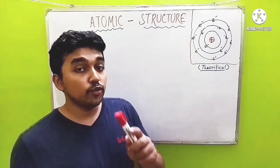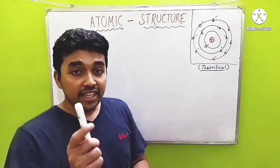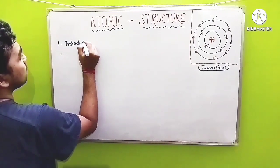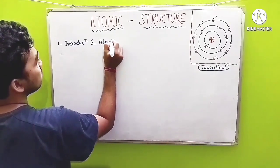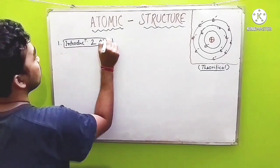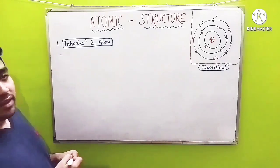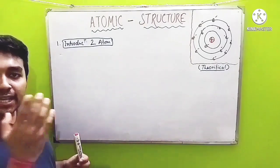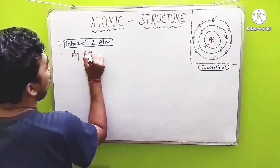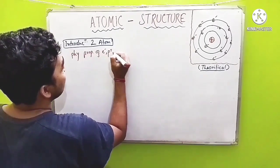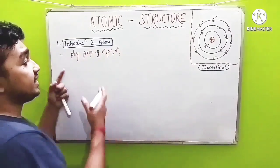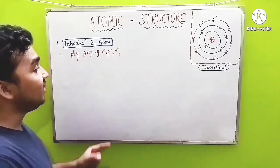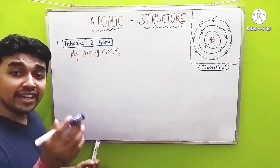Firstly, you need to know the introduction to atom. Here, you will get to know the different physical properties of the elementary particles of an atom — that is, the physical properties of electrons, protons, and neutrons — how they were gradually discovered, by whom, and what type of questions actually come from this part. All are included in the video of introduction to atom.